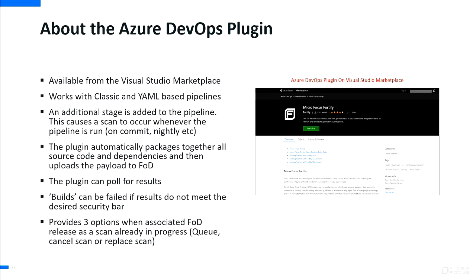That's really useful, particularly if there's a possibility of accidentally missing out dependencies and getting results that aren't as high quality as you'd like. The plugin can poll for results and can also fail a build if your security bar is not met — tied into security policies in FOD that you can define. You can also configure the plugin to queue, cancel, or replace a scan if one is already in progress for that release.